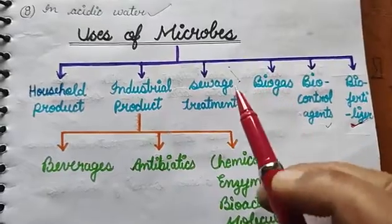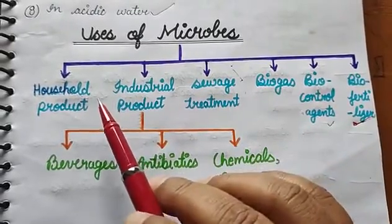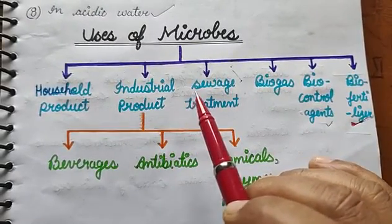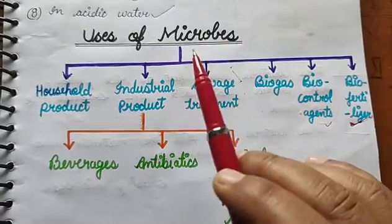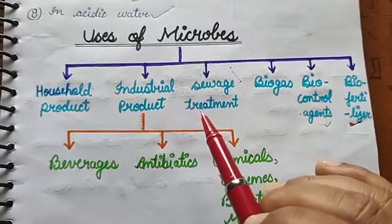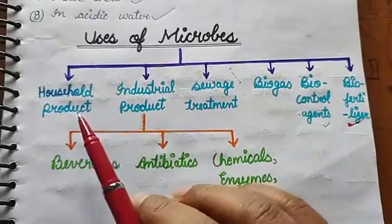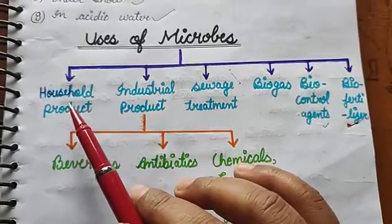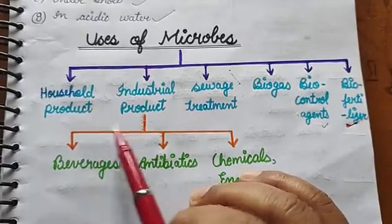So students, these useful effects we will study in this chapter one by one. Now firstly, we study the household product.